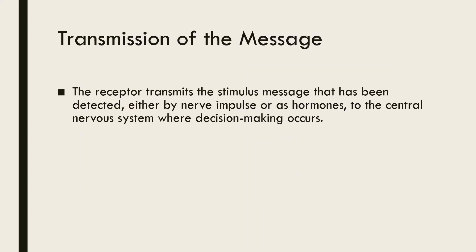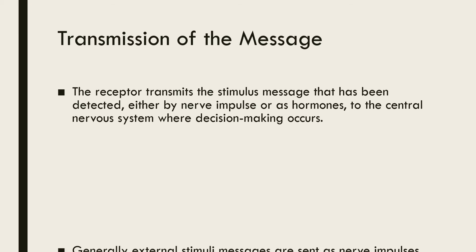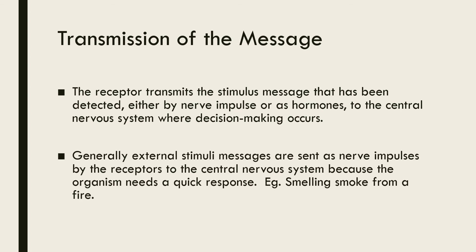In multicellular organisms, the receptor that receives the stimulus and the effector that responds are often widely separated in the body. It is therefore important that there are efficient mechanisms of internal communication. In animals, this involves both the nervous system and the endocrine or hormone-producing system. The stimulus message is sent to the central nervous system where decision making occurs. Generally, external stimuli messages are sent as nerve impulses by the receptors to the central nervous system, because the organism needs a quick response.